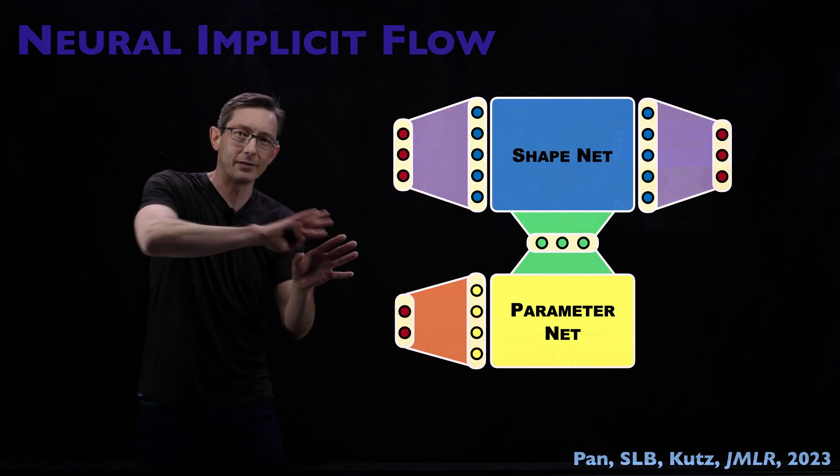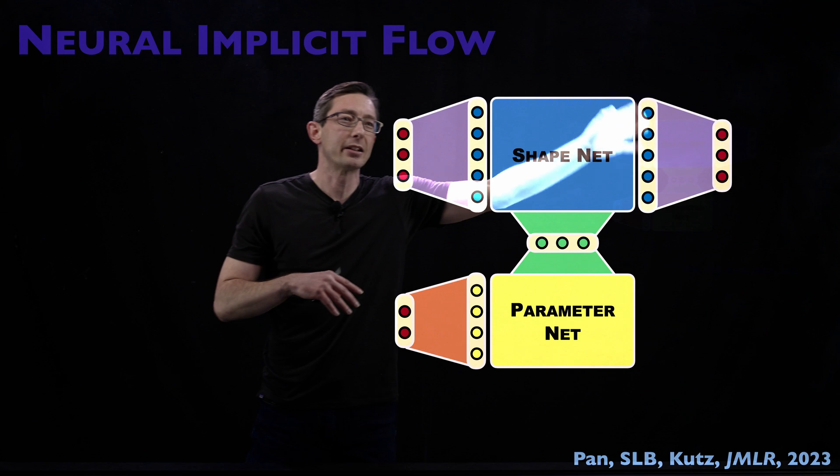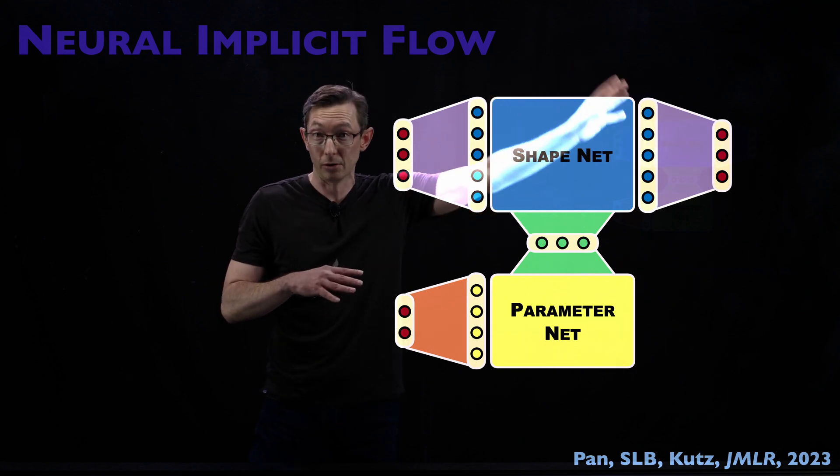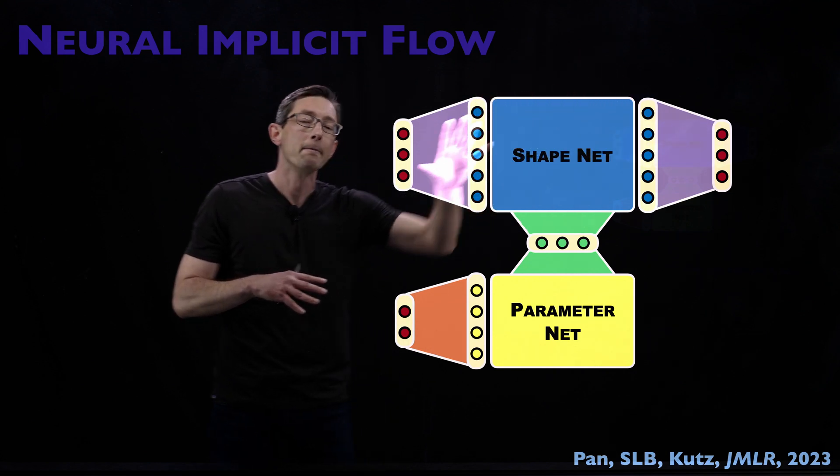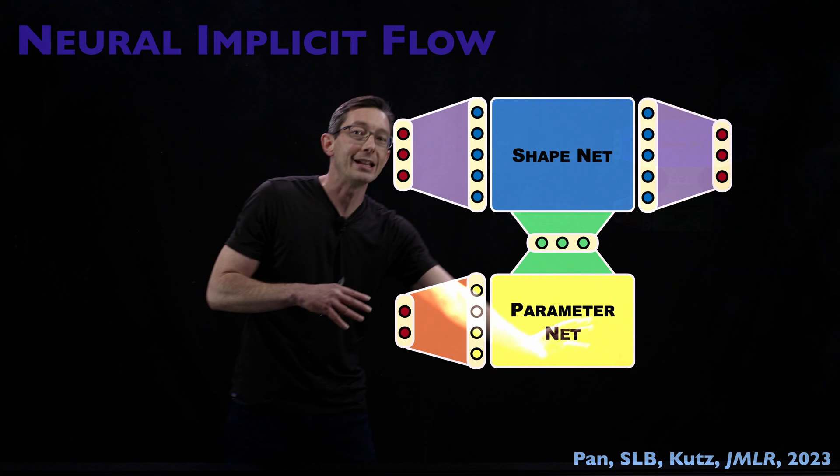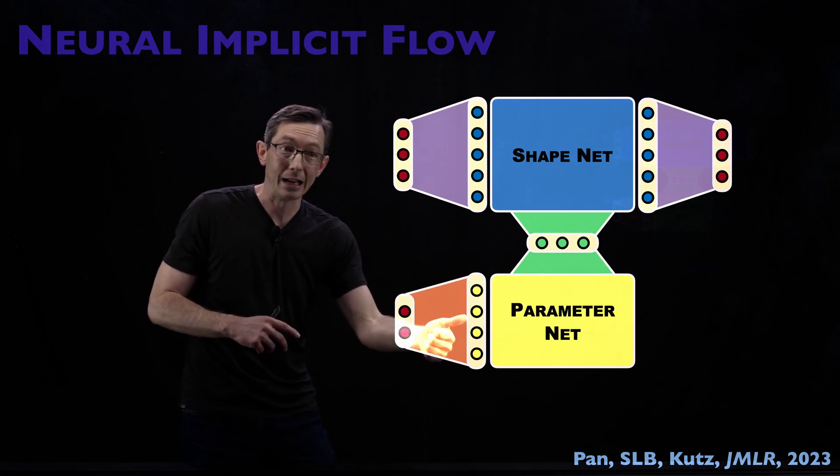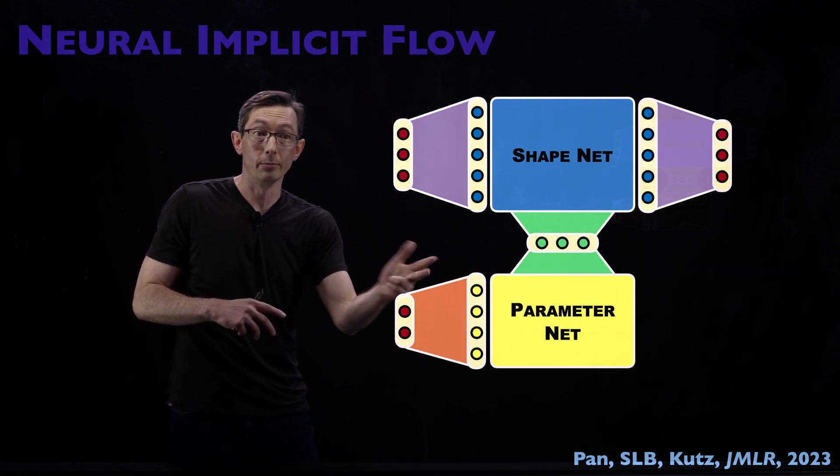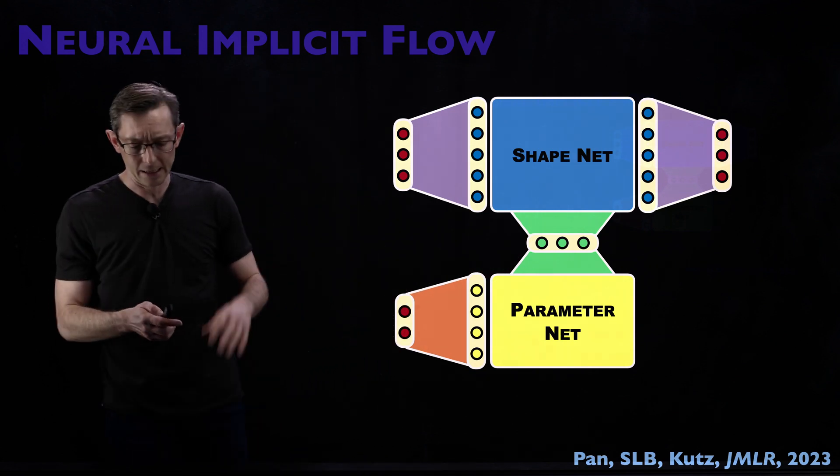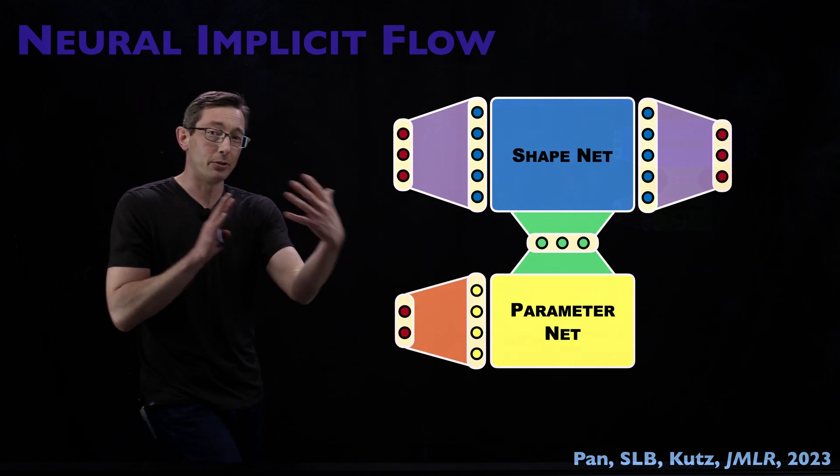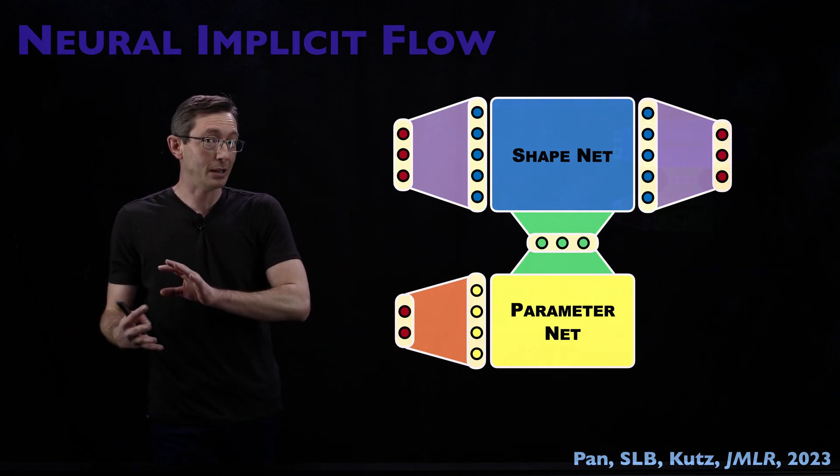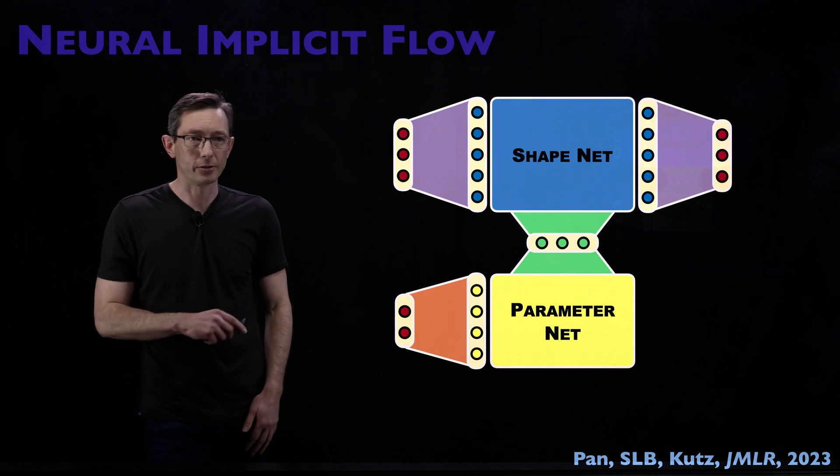I think this is a nice way of separating out the things that are largely spatial - that's what the Shape Net means - and things that are largely exogenous, like time, parameters, control inputs down here. So a really cool idea, and pretty closely related to both deep operator networks and PINN functions in some pretty interesting ways.